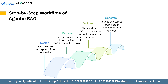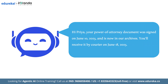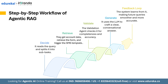Once all the facts are verified, the generation agent calls the LLM to put everything together into a clear, conversational reply. Every step logs its outcome — successes and hiccups alike — and that data feeds back into the system so future queries run even smoother and more accurately. That's the agentic loop: plan, retrieve, validate, generate, and learn — working together to deliver fast, reliable, and context-rich answers.